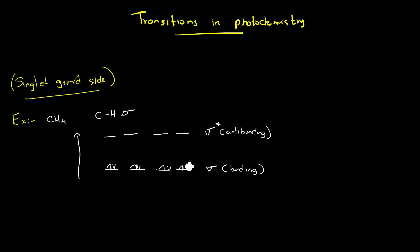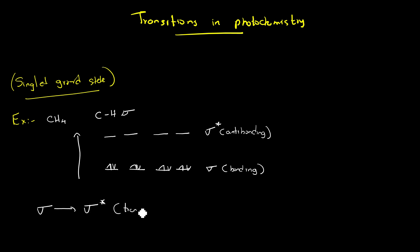So the question is: what are the possible transitions? You can clearly see there is only one possible transition, which is sigma to sigma star. This is the only possible transition for methane to undergo.